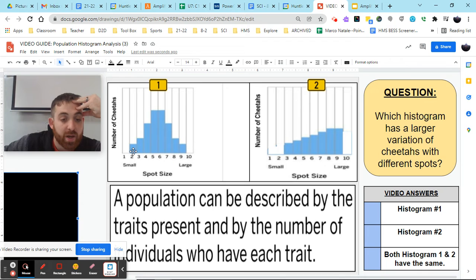So, we have individuals with spot number two, individuals with spot number three, four, five, six, seven, eight, and nine. So, we have one, two, three, four, five, six, seven, eight variations. Eight different variations. Now, yes, we have more cheetahs with some variations, like five and six, than others, like two and ten. But we have eight variations total.